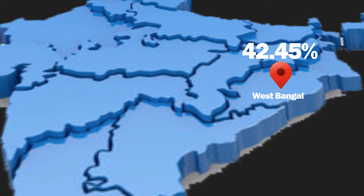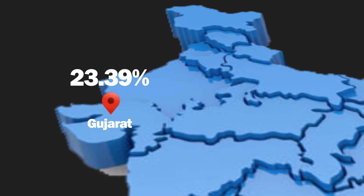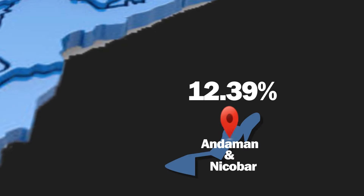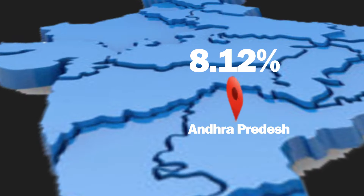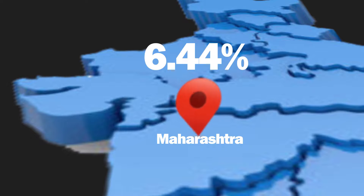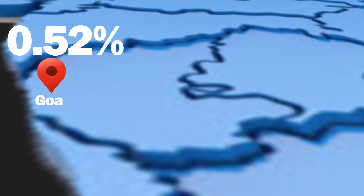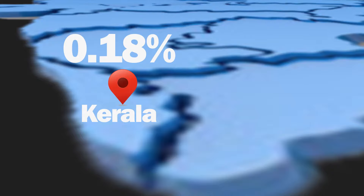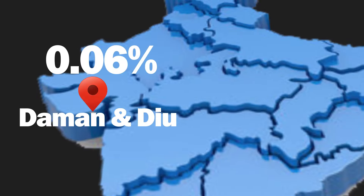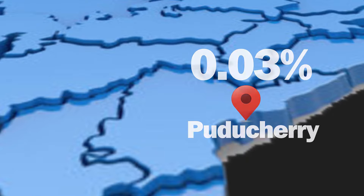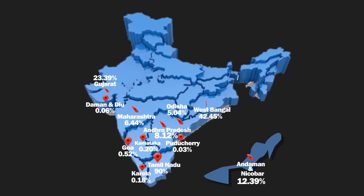In decreasing order of mangrove coverage: after West Bengal, it is Gujarat, then Andaman and Nicobar Islands, then Andhra Pradesh, then Maharashtra, followed by Odisha, Tamil Nadu, Goa, Karnataka, Kerala, and after Kerala it is Daman and Diu.